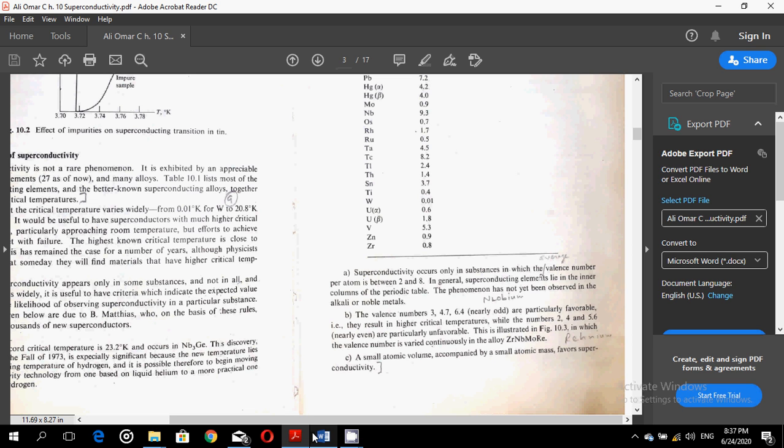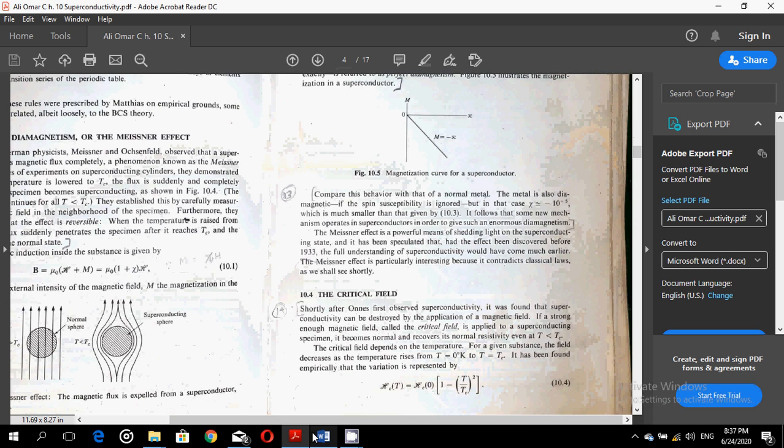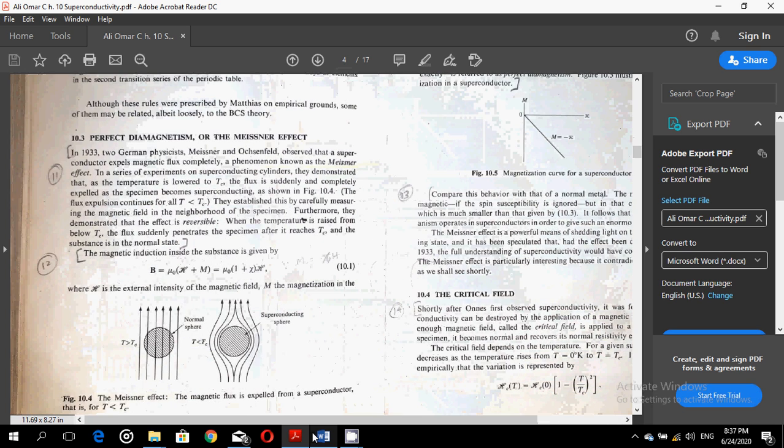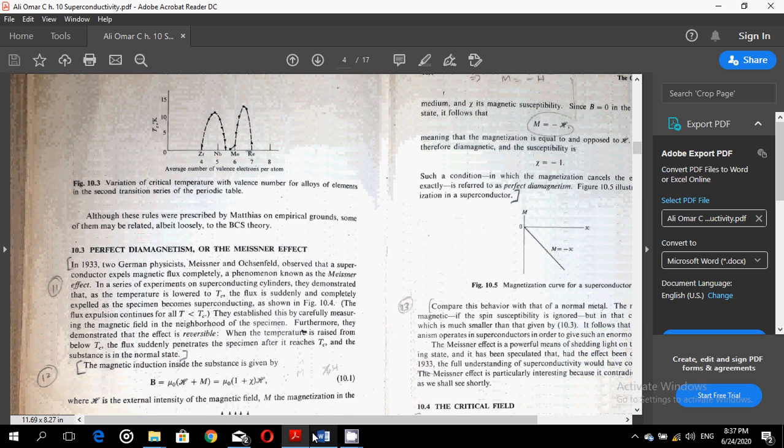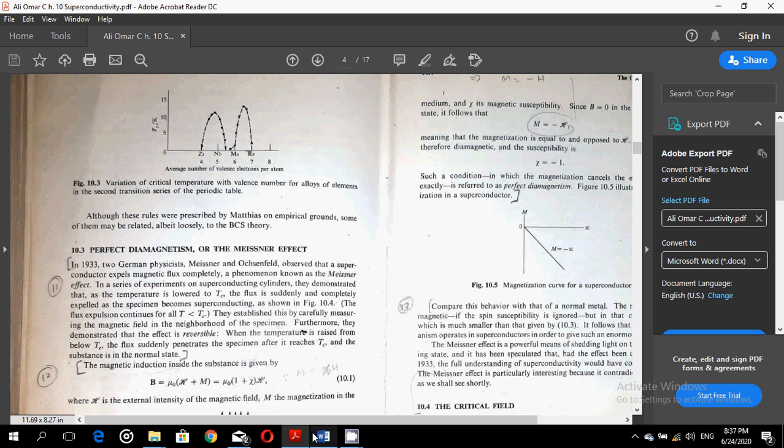This is illustrated in Figure 10.3, in which the valence number is varied continuously in the alloy by zirconium, niobium, molybdenum. Rule C: A small atomic volume accompanied by a small atomic mass favors superconductivity.